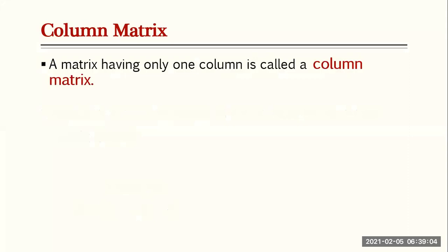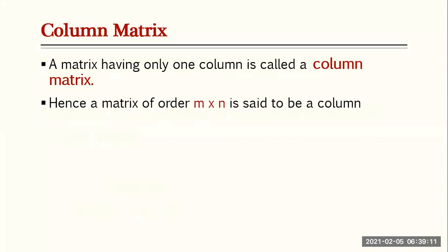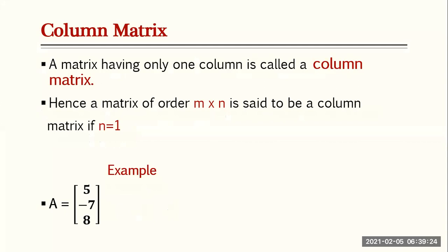A matrix having only one column is called a column matrix. Hence a matrix of order m by n is said to be a column matrix if n is equal to one. For example, matrix A = [5, -7, 8] is a column matrix because it has only one column.